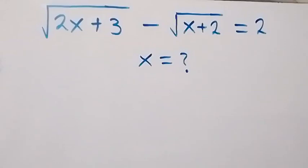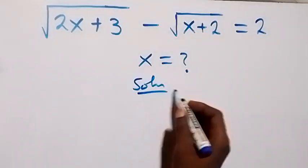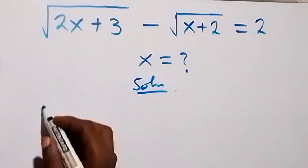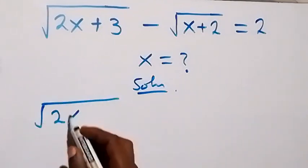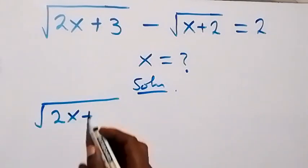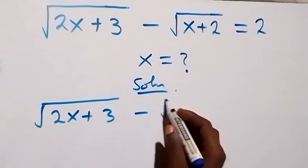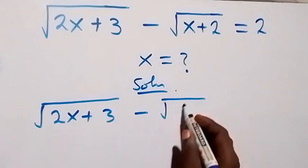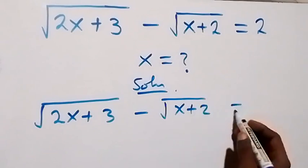Hello y'all. Welcome to solve for x in this nice problem involving square root. From what is given, we have square root of 2x plus 3, then minus square root of x plus 2, equals to 2.